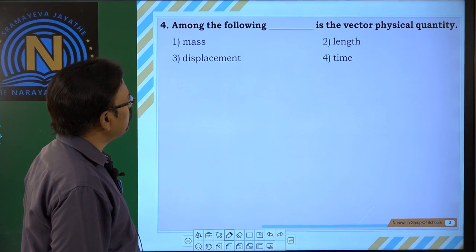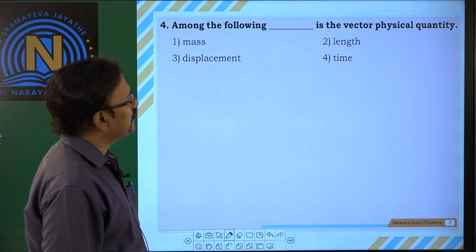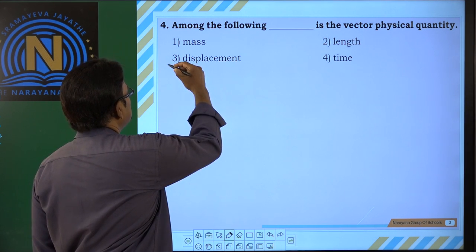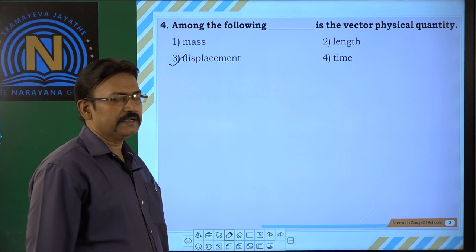Let us see fourth one. Among the following, dash is the vector physical quantity. So, here vector is, displacement is the vector quantity.